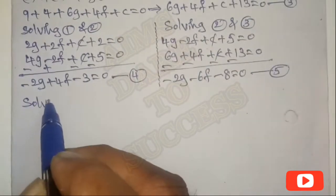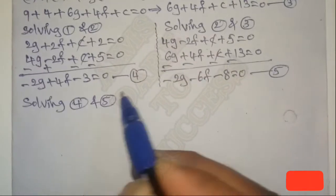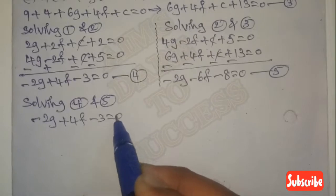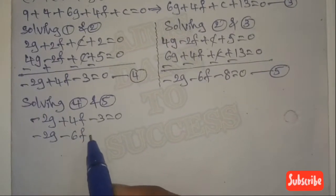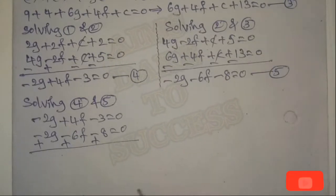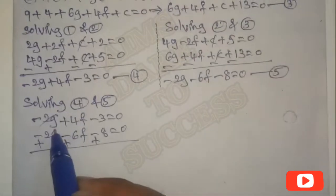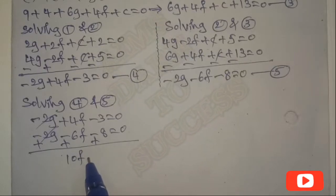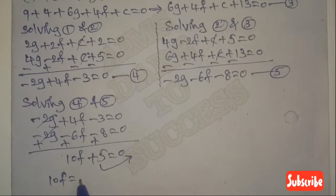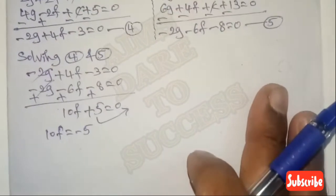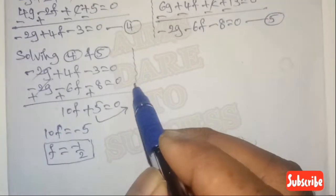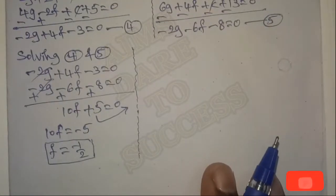Now solving Equation 4 and Equation 5. Equation 4: -2G + 4F - 3 = 0. Equation 5: -2G - 6F - 8 = 0. Subtracting to cancel G: 4F + 6F = 10F, and -3 - (-8) gives +5, so 10F + 5 = 0, meaning 10F = -5, therefore F = -1/2.